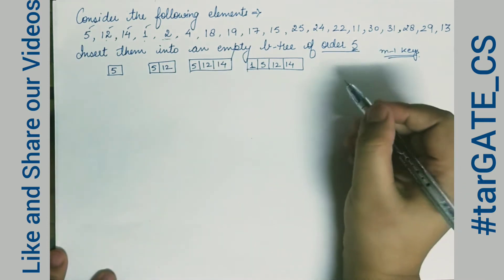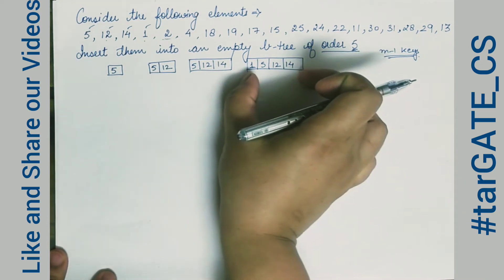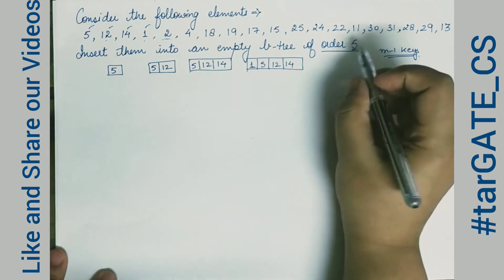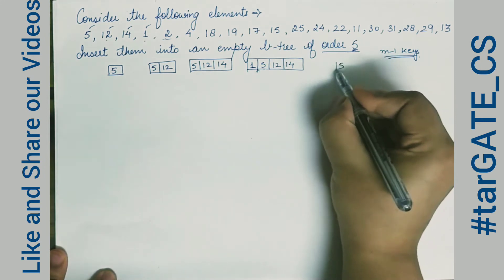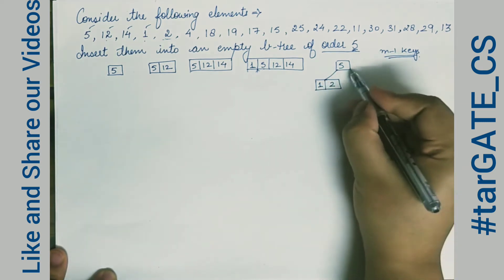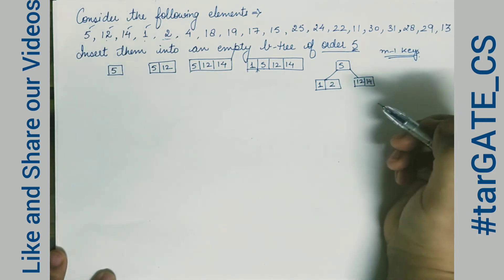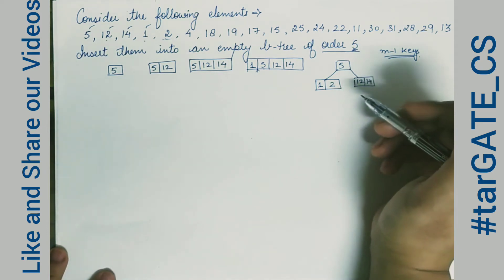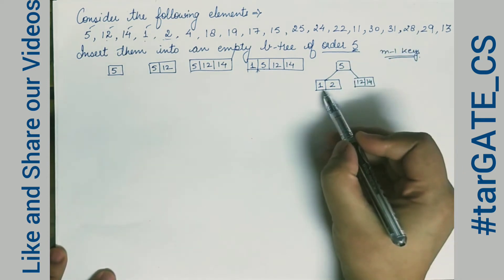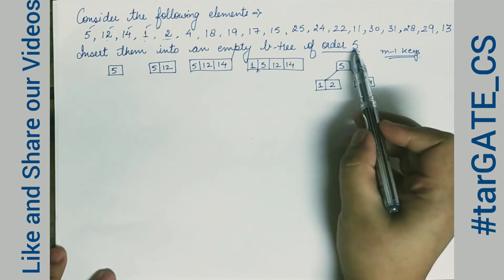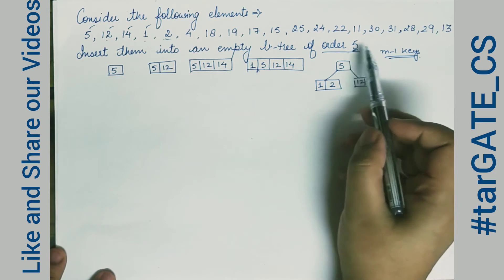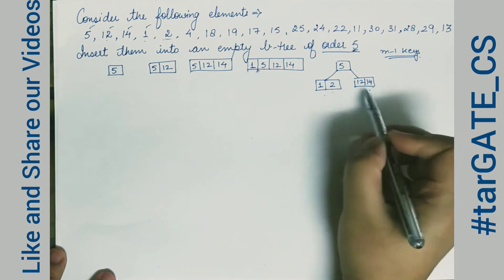When we insert the next element, 2, we must split the node. The element 5 becomes the root node. On the left child we have 1 and 2, and on the right child we have 12 and 14. This satisfies the rule of at least ceiling(M/2) = ceiling(5/2) = ceiling(2.5) = 2 children.